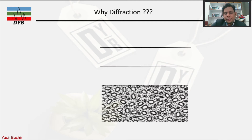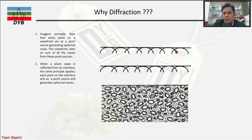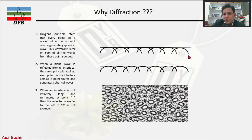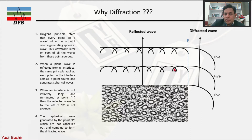Consider three reflectors in the subsurface. This follows Huygens' principle, which states that each point on a wavefront acts as a point diffractor generating spherical waves. Where the reflector is discontinued at point P, a diffracted wave is generated on either side with positive and negative amplitude. After stacking the reflected waves, the diffracted waves remain off the reflector.